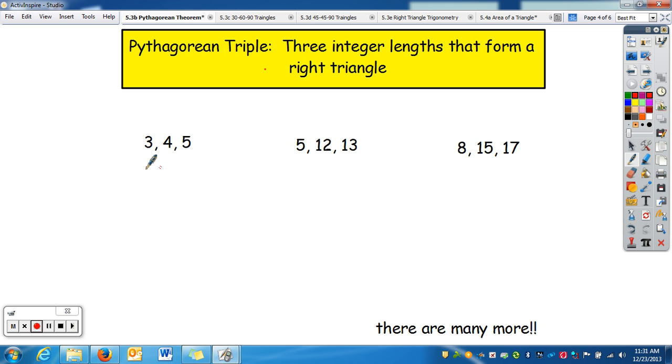Now, what's nice about a Pythagorean triple, it also works for multiples of them. So, if I take everything times 2, that means 6, 8, and 10 is also a triple. Or if I take it times 3, that means 9, 12, and 15 are also a triple. And that works the same here where we have 10, 24,